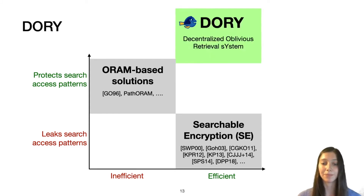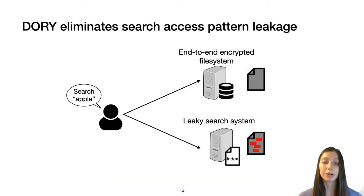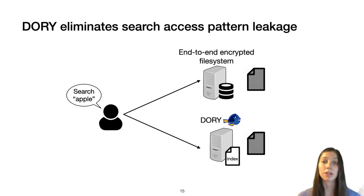So on one hand we have efficient schemes that leak search access patterns — searchable encryption — and on the other hand we have inefficient schemes that protect search access patterns — ORAM-based solutions. We therefore introduced Dory, which is both efficient while protecting search access patterns. Dory replaces a leaky search system and ensures that the attacker learns no information beyond the leakage already inherent in the end-to-end encrypted file system, as well as when a user searches and the documents the search is taking place over.